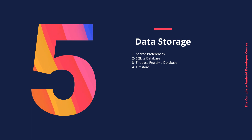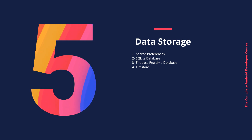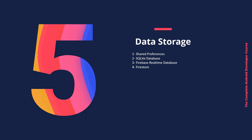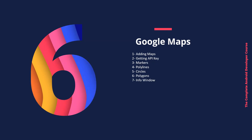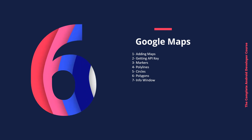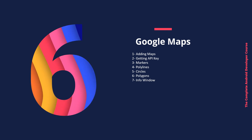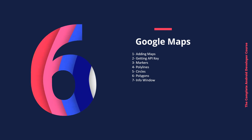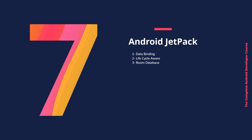In the fifth section, we will learn about data storage: shared preferences, SQLite database, Room database, Firebase Realtime Database, and Firestore. We will also cover Google Maps, including adding maps to apps, getting API keys, markers, polylines, circles, polygons, and info windows.